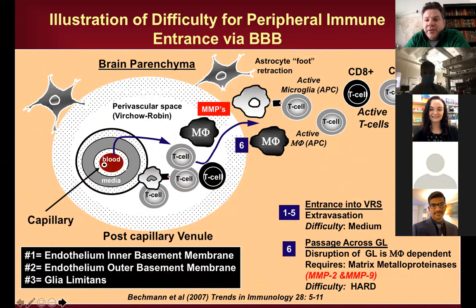Getting into the perivascular space is relatively easy, but getting into the brain parenchyma requires a few more steps, including matrix metalloproteases. MMP-7 was one example shown, but MMP-2 and MMP-9 have also been shown to be important.